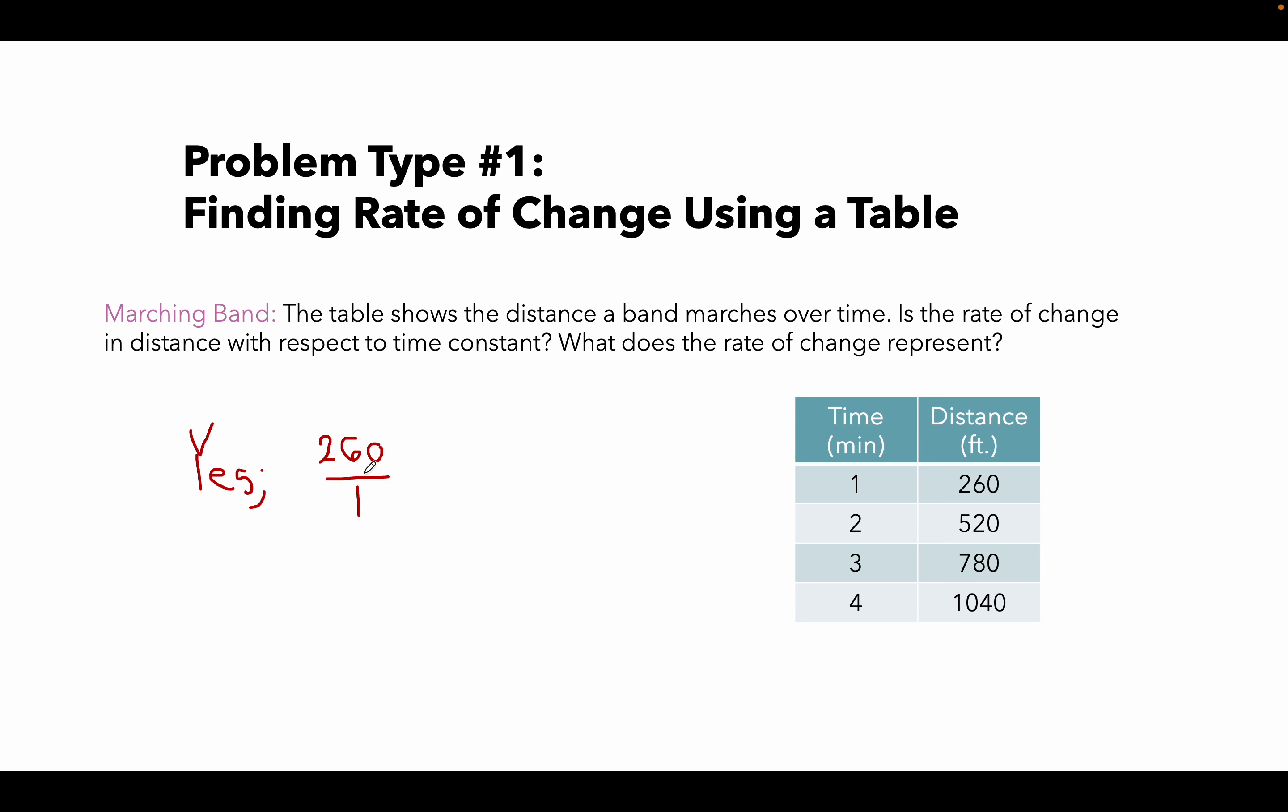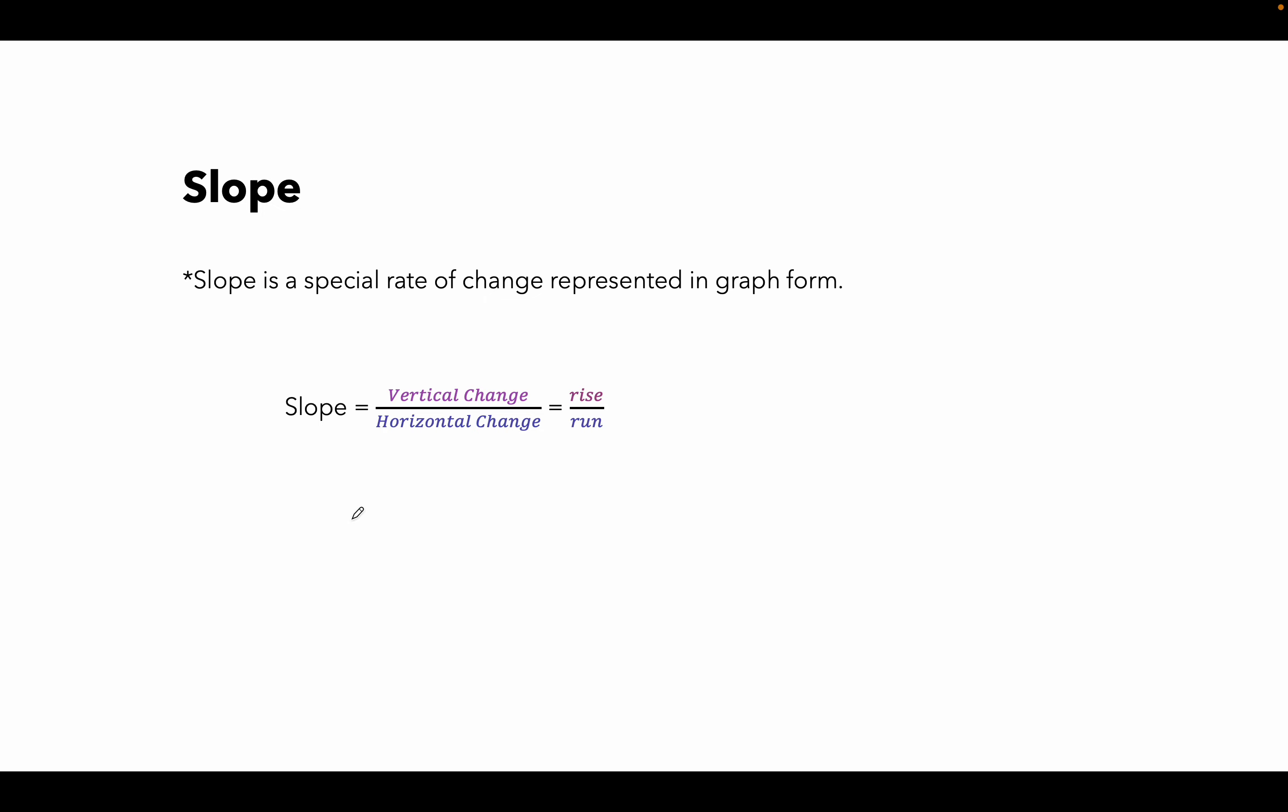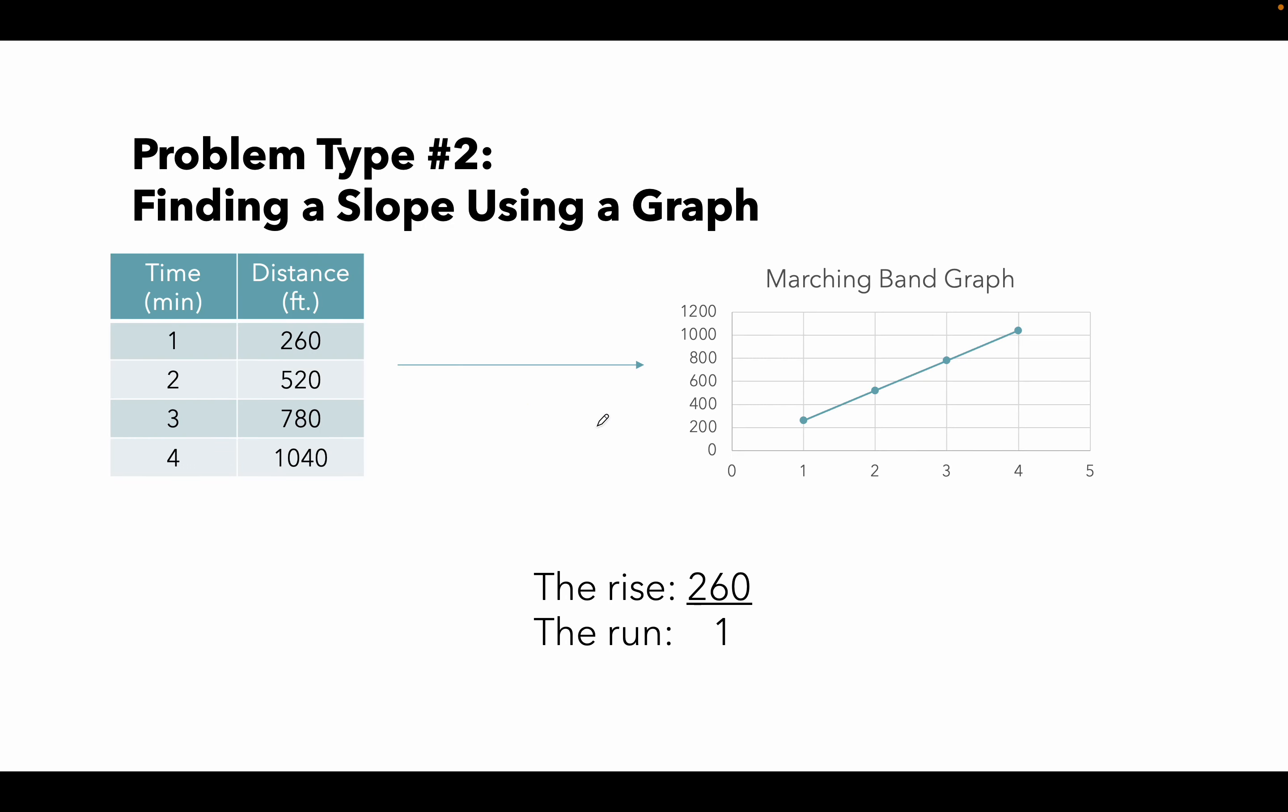All right, the second problem type involves slope. Slope is a special rate of change represented in graph form. The slope equals the vertical change over the horizontal change, the rise over the run. Problem type number two: finding a slope using a graph.